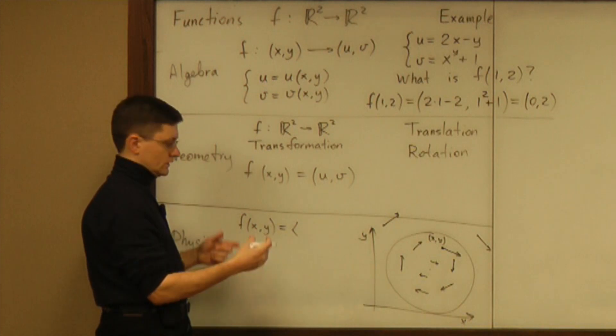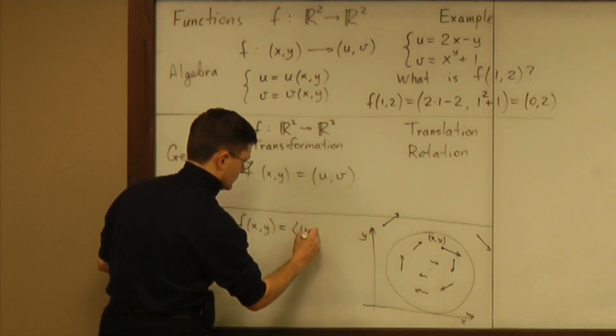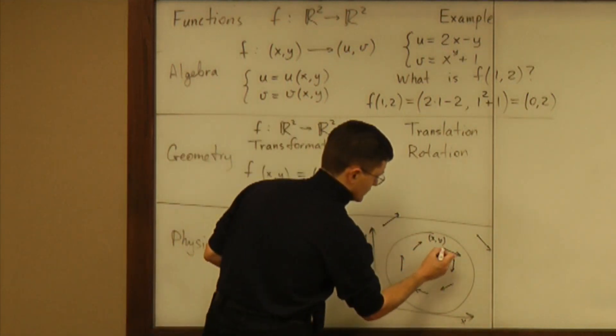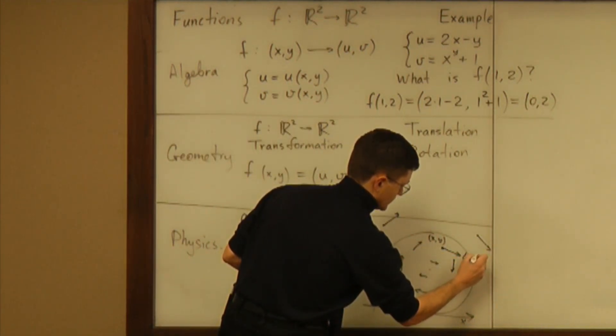And that vector has to have coordinates and those are exactly those u and v. So you assign to each point a vector (u, v).